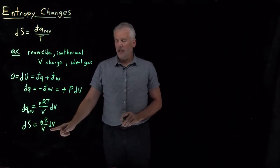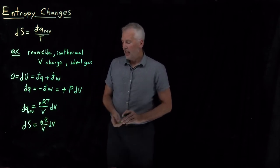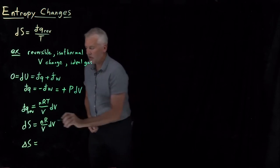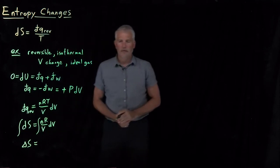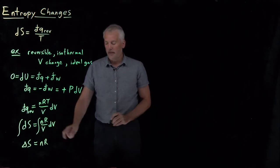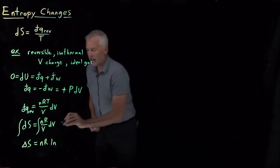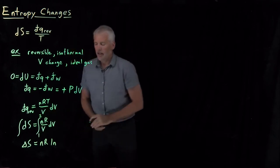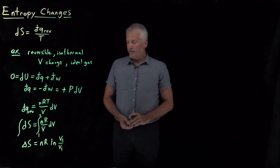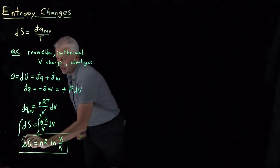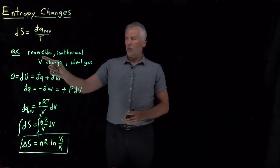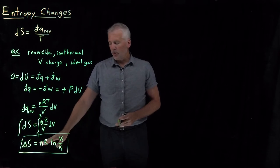That tells me how the entropy is changing as I change the volume reversibly and isothermally for this ideal gas. If I want to calculate the entropy change for a finite change — not just an infinitesimally small change in volume — I need to integrate. Integrating dS gives me ΔS. Integrating nR over V gives, on the right-hand side, n and R pulled out of the integral, and the integral of 1/V dV is just log of the volume. Evaluating from initial to final conditions: log V2 minus log V1 equals log(V2/V1). So the entropy change is ΔS = nR log(V2/V1).